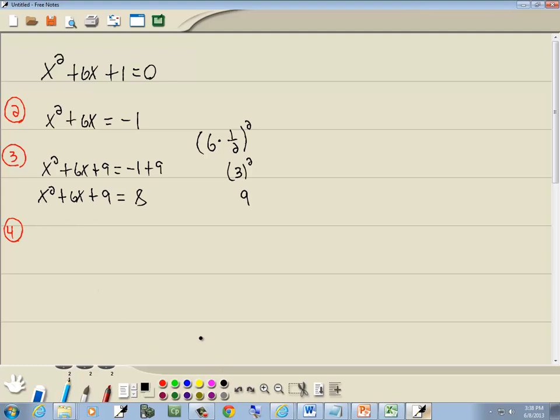Step 4, factor the left side. Left side factors as x plus 3 squared. Now remember the trick to that. Whatever number is right here, sign included, right before you squared, is always what goes right here.